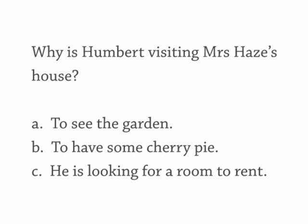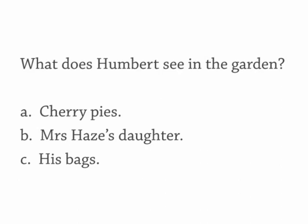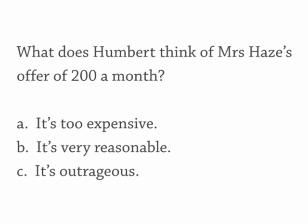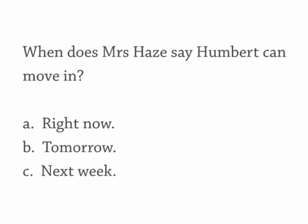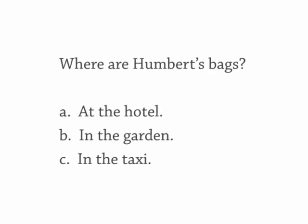Why is Humbert visiting Mrs. Hayes' house? A. To see the garden. B. To have some cherry pie. C. He's looking for a room to rent. Answer: C. What does Humbert see in the garden? A. Cherry pies. B. Mrs. Hayes' daughter. C. His bags. Answer: B. What does Humbert think of Mrs. Hayes' offer of $200 a month? A. It's too expensive. B. It's very reasonable. C. It's outrageous. Answer: B. When does Mrs. Hayes say Humbert can move in? A. Right now. B. Tomorrow. C. Next week. Answer: A. Where are Humbert's bags? A. At the hotel. B. In the garden. C. In the taxi. Answer: C.